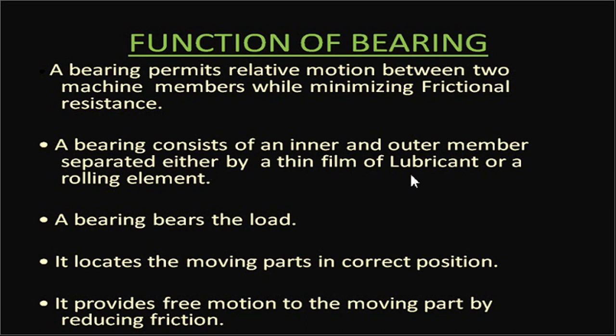In a sliding contact bearing, there is either a lubricant or rolling element between the stationary and rotating components. The outer member is usually the stationary component and the inner member is the rotating component. The bearing takes all the loads acting on the shaft, since the shaft may have gears or pulleys mounted on it.